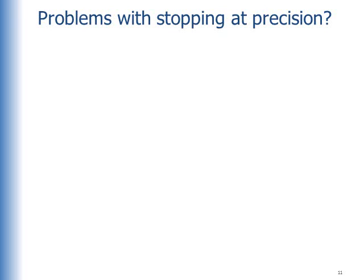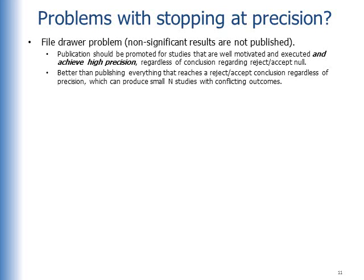Now are there problems with stopping at precision? Well, there's the file drawer problem. What's that? Well, that's when non-significant results are not published—there's bias in publication which favors publishing significant results. Well, this approach, stopping at precision, says that publication should be promoted for studies that are well motivated and executed and achieve high precision, regardless of the conclusion regarding reject-accept a null. Well, this is better than publishing everything that reaches a reject-accept conclusion regardless of the precision, because that rule can produce small n studies with conflicting outcomes.